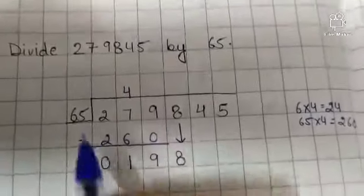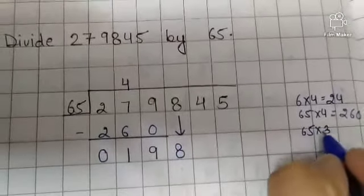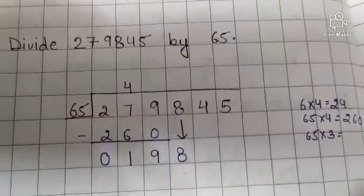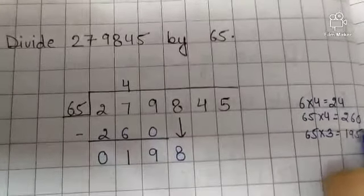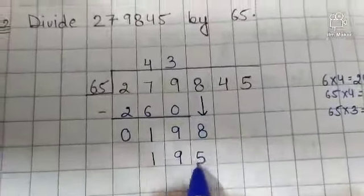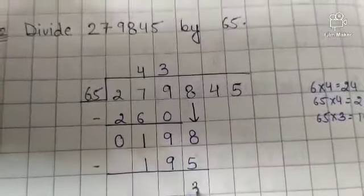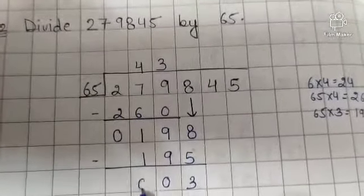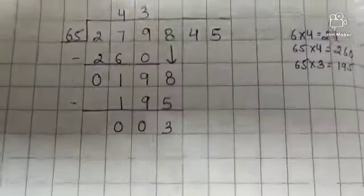So multiply 65 by 3. 6 twos are 12 and 6 threes are 18, so 65 threes are 195. Now subtract: 8 minus 5 is 3, 9 minus 9 is 0, and 1 minus 1 is 0.